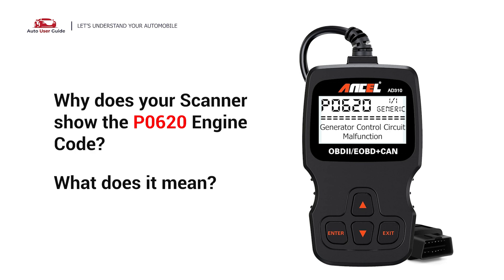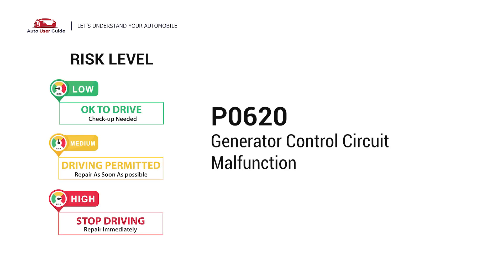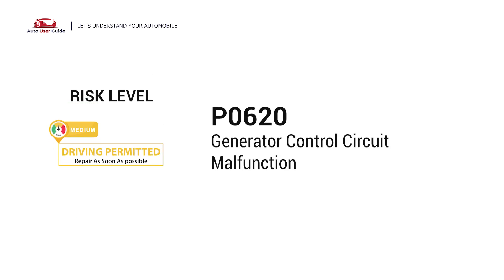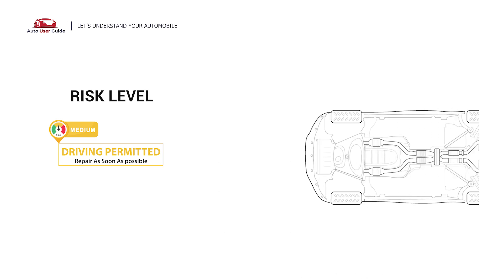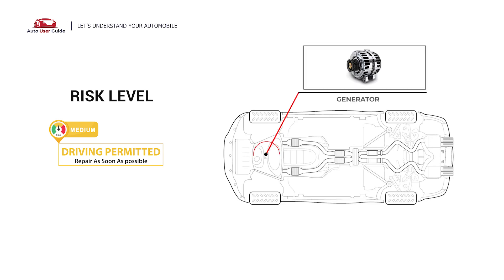Why does your scanner show the P0620 engine code, and what does it mean? The P0620 engine error code stands for Generator Control Circuit Malfunction. It indicates the powertrain control module or engine control module detects the issue when the electrical signals from the generator control circuit are abnormal. It means the PCM has detected an unexpected voltage in the generator control circuit.